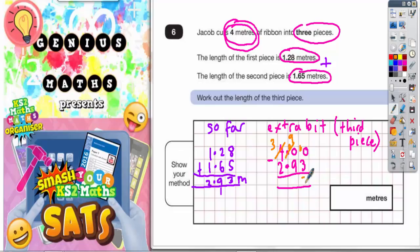So 10 take away 3 is 7. 9 take away 9 is 0. And 3 take away 2 is 1. Not forgetting to put your decimal point in. So your final answer is 1.07 meters. So that's what needs to go in this space. 1.07 meters.